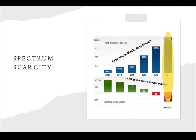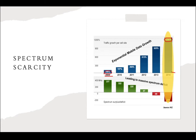Here we can see mobile data growth throughout the years, specifically from 2009 to 2014, where the percentage jumped from 100% to 1,250% — an exponential growth. As mobile data increases, the spectrum has a large deficit. This is why spectrum scarcity is considered one of the major wireless communication challenges, and governments must regulate spectrum usage accordingly.